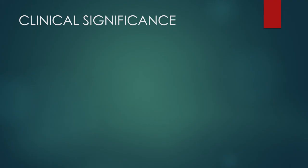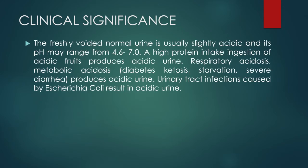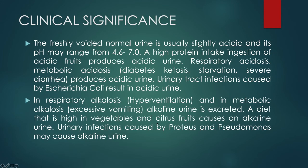Regarding clinical significance of pH changes — freshly voided normal urine is slightly acidic, ranging from 4.6 to 7. If there is higher protein intake or the body is in an acidic condition, urine will be more acidic. If the person is eating citrus foods or high amounts of vegetables, or if the body is experiencing excessive vomiting or an alkaline condition, the urine pH can be alkaline. From the next class, we will start with the chemical examination of urine. Thank you very much.